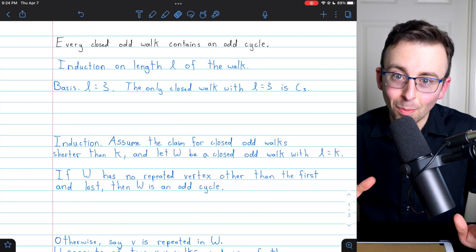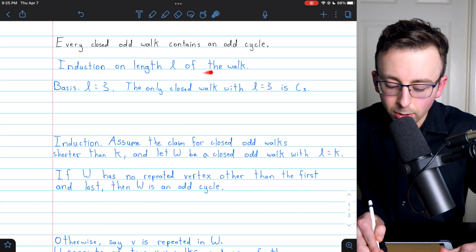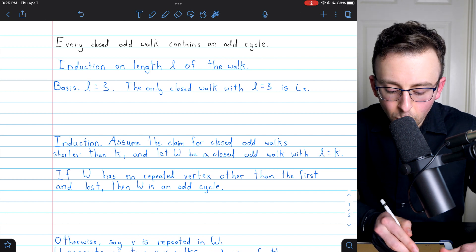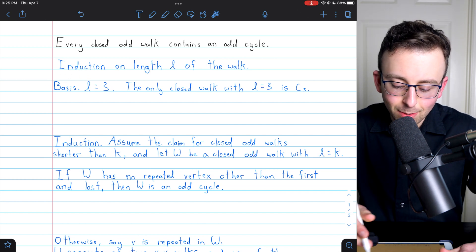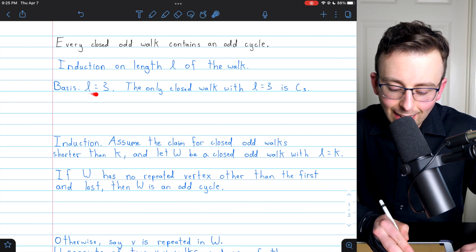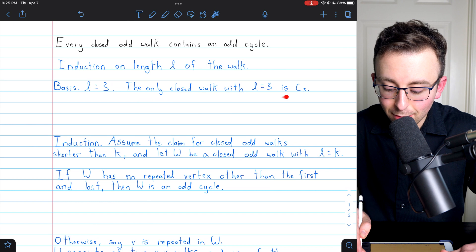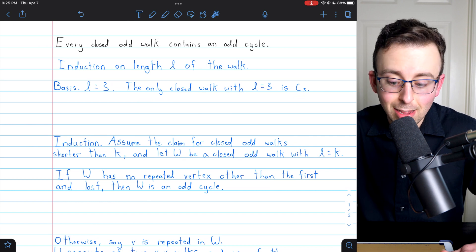Okay, now let's get into the proof. This is going to be induction on the length L of the walk. We start with the basis step. The shortest possible closed odd walk has a length of three. And the only walk like that happens to be the cycle graph C3.